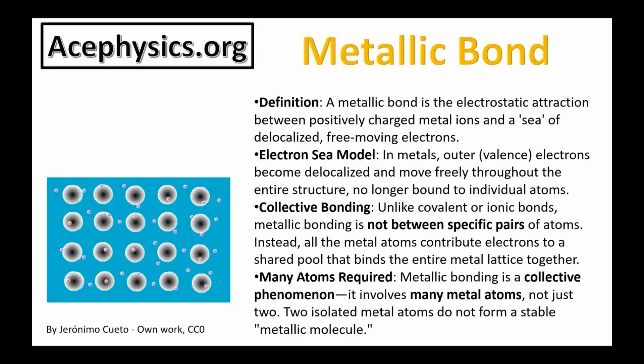And finally, a metallic bond is the electrostatic attraction between positively charged metal ions and a sea of delocalized free-moving electrons. In metals, outer electrons become delocalized and move freely throughout the entire structure. Unlike covalent or ionic bonds, metal bonding is not between specific pairs of atoms. Metallic bonding is a collective phenomenon. It involves many metal atoms, not just two. Two isolated metal atoms do not form a stable metallic molecule.